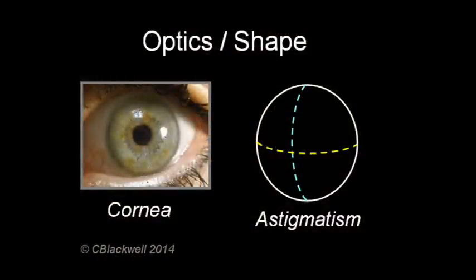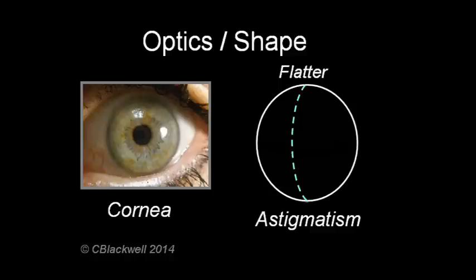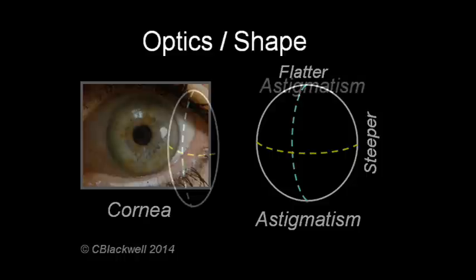Another kind of aberration is astigmatism, meaning the curve of the cornea is not the same in the up-down direction as in the side-to-side direction. Picture it like the oval shape of a football.